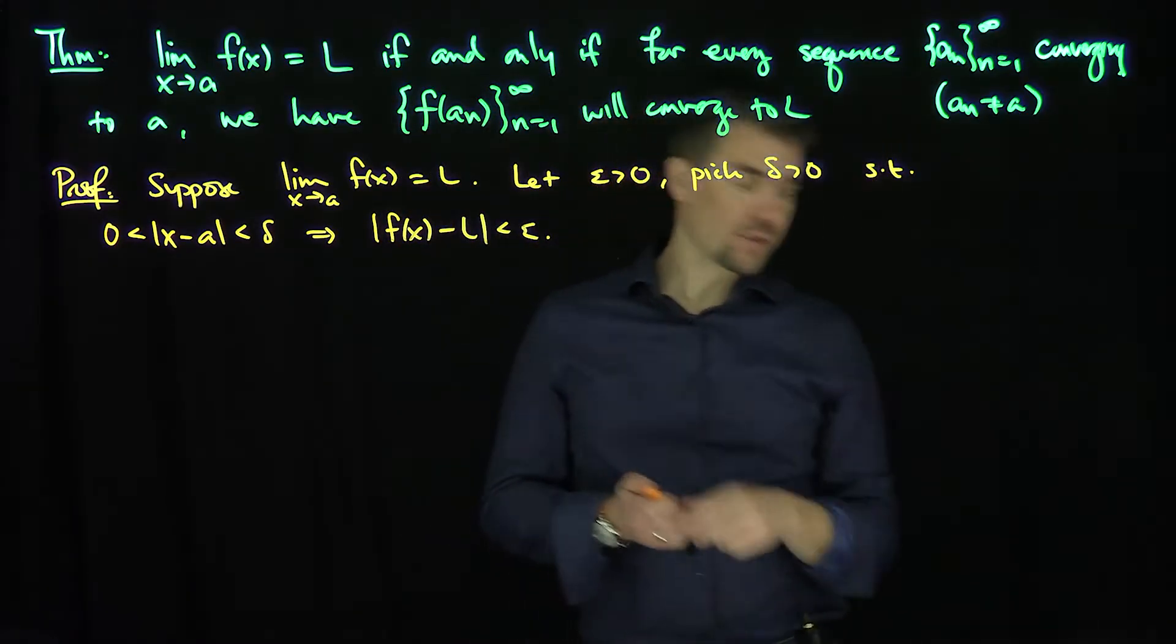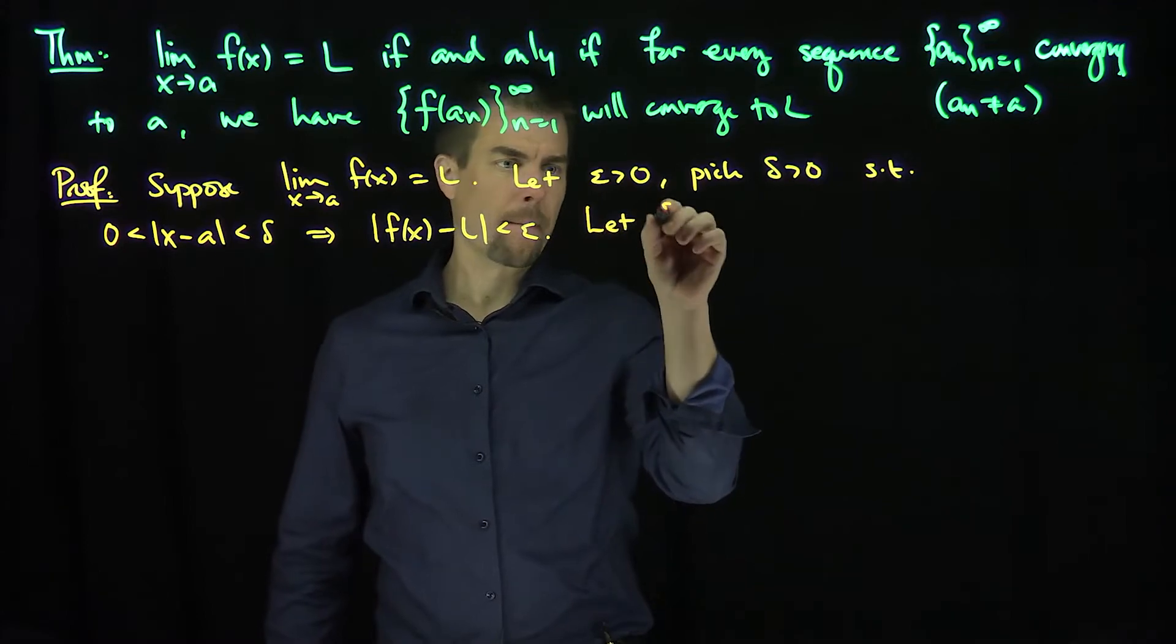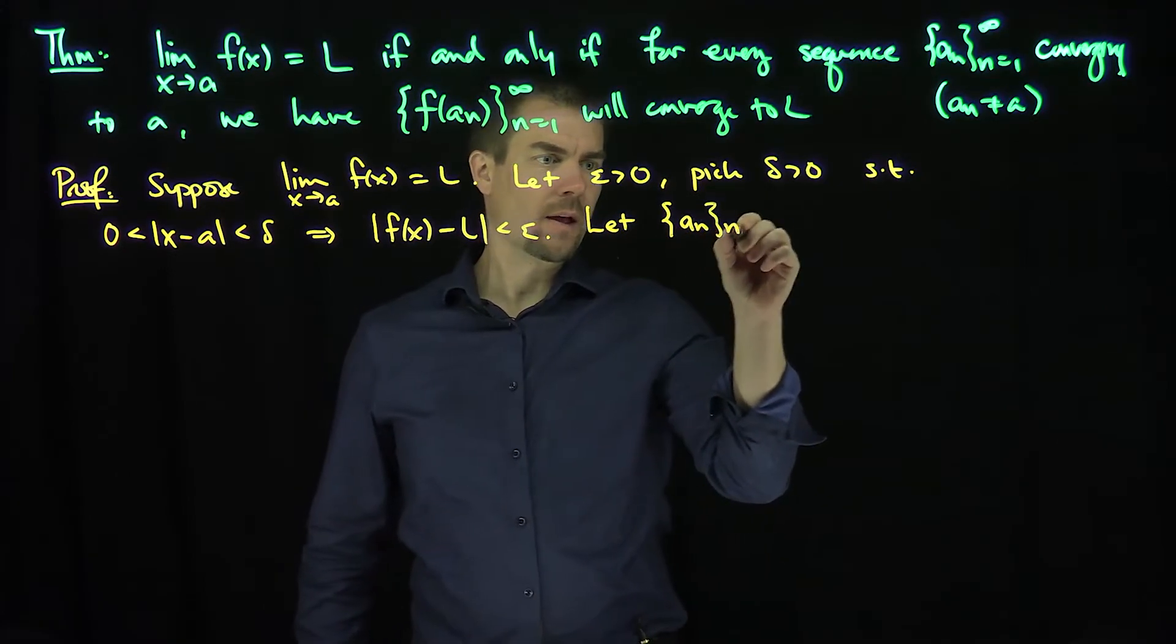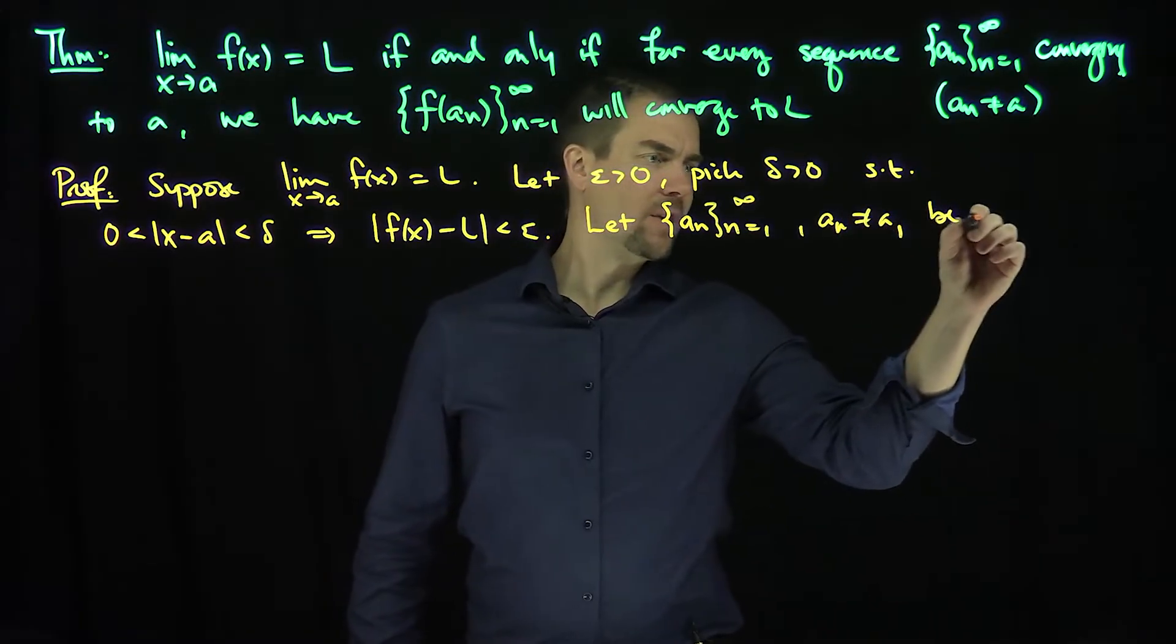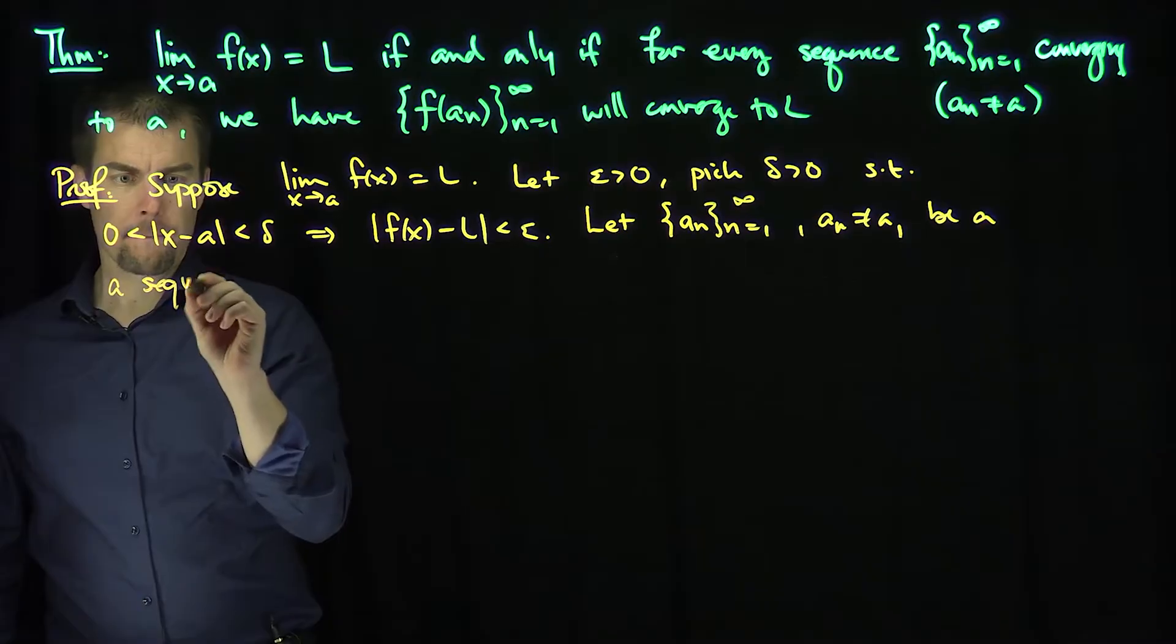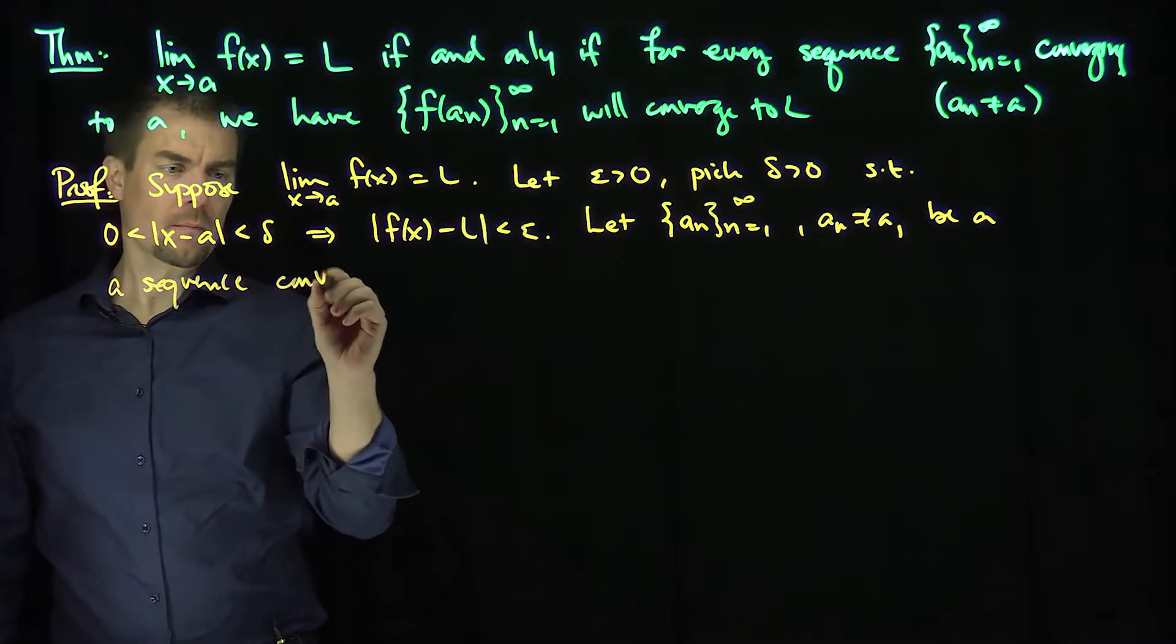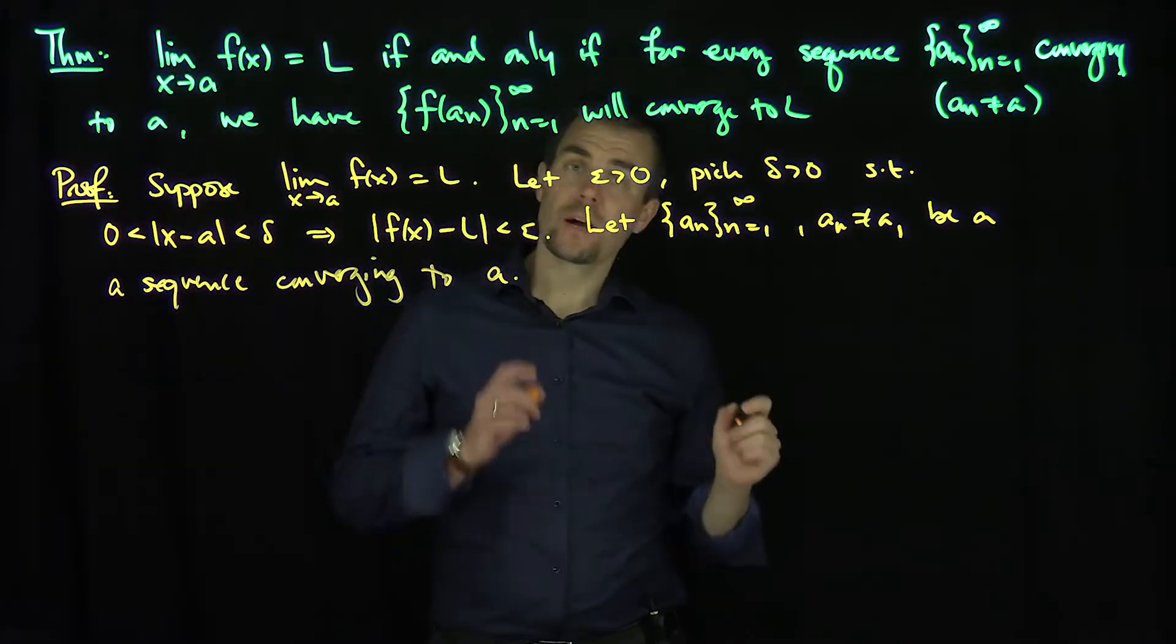Now, I want to pick a sequence that converges to a. So next, let's pick a sequence. So let {aₙ}, n goes from 1 to infinity, with aₙ not equal to a, be a sequence converging to a. Okay, so it converges to a.